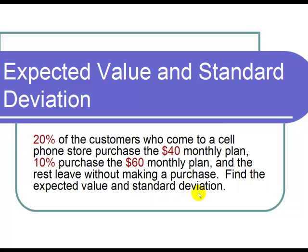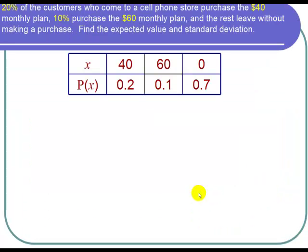So we start by creating a probability distribution table. For the x values we have a $40 purchase, a $60 monthly purchase, and the ones that didn't purchase a plan at all - that's a $0 monthly purchase.